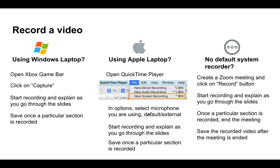Now if none of the default recorders on your laptop are working, a quick hack is to use Zoom. Just create a meeting on your own with only you connected, start recording, and go through your PPT slides as if you are explaining to a friend. Once you are done with a particular section, end the meeting — the recording only finalizes when you end the meeting in Zoom. Make sure to save the recorded video after the meeting ends.